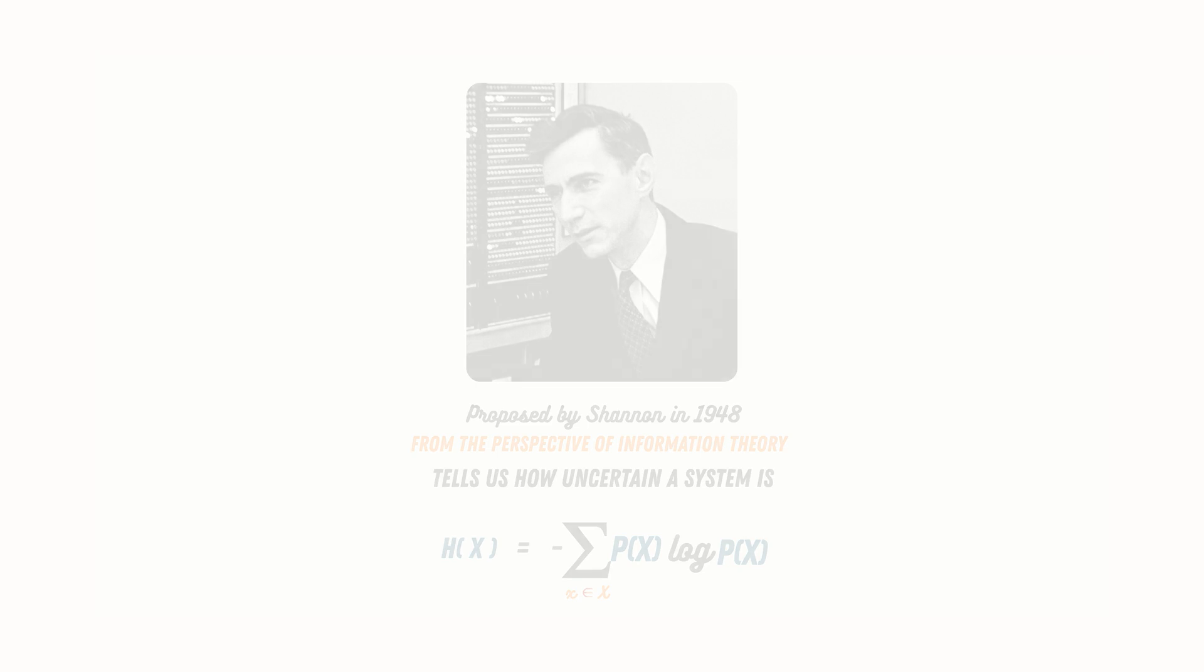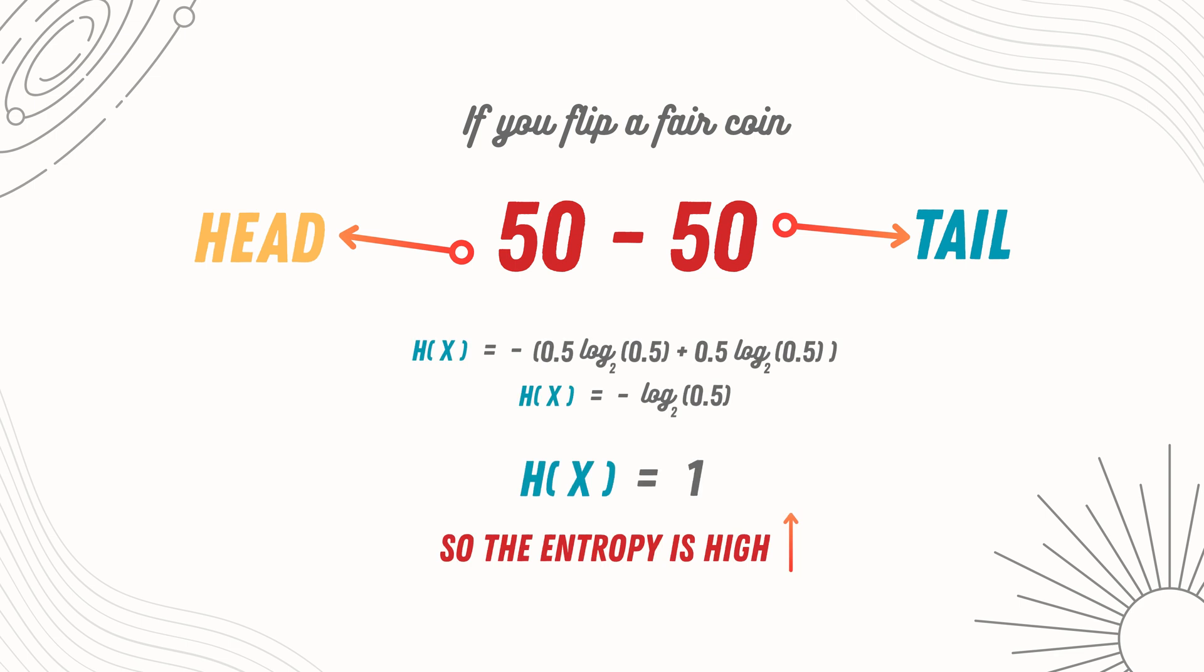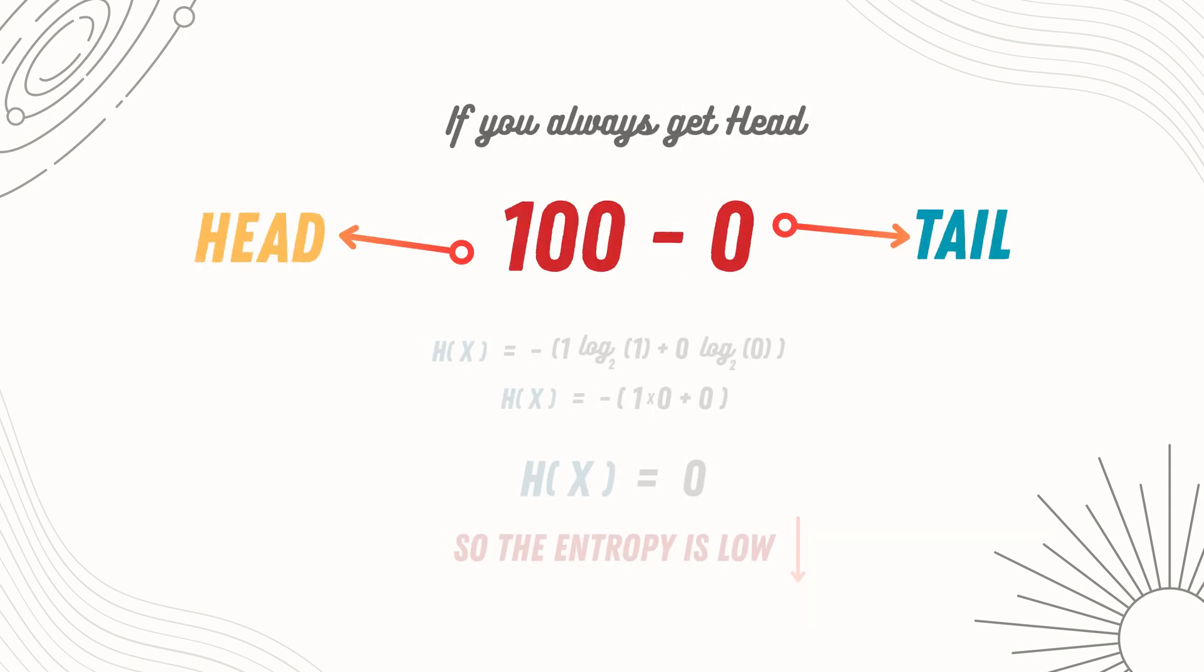Think of it this way. If you flip a fair coin, you have a 50-50 chance of getting a head or tail, so the entropy is high. If you always get heads, the entropy is zero, because there is no uncertainty in the experiment. I hope this makes intuitive sense.